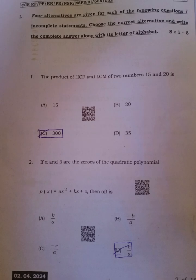First main, the product of HCF and LCM of two numbers 15 and 20 is, the answer is C 300.